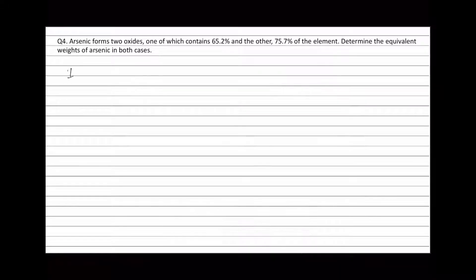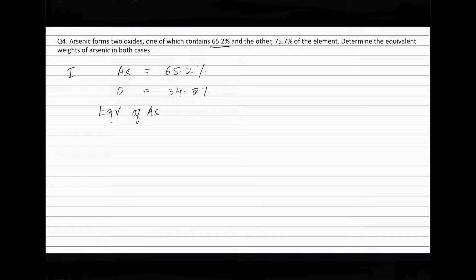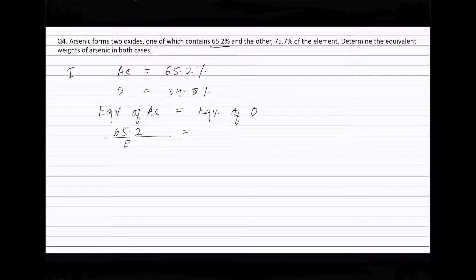In the first case, the percentage of arsenic is 65.2%. Therefore, the percentage of oxygen will be 34.8%. In this oxide, equivalence of arsenic is equal to equivalence of oxygen. Equivalence of arsenic will be 65.2 divided by E, where E represents the equivalent weight of arsenic. This is equal to 34.8 divided by 8, where 8 is the equivalent weight of oxygen.